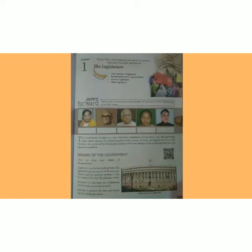The Constitution of India is a very important compilation of procedures and rules governing issues which concern the common people of the country. In India, the head of the state is the President, who is elected by the elected members of the two houses of the Parliament and the state legislative assemblies. Bharat ka samvidhan bahut hi jyada compilation hai procedures ka aur rules ka, jis mein desh ke saadaran logon ka concern hai. India mein state ka jo head hai, President hota hai, jo ki state legislative assemblies aur Parliament ke dono house ke members ke dwara elect kiya jata hai.